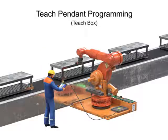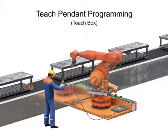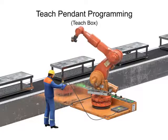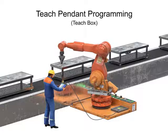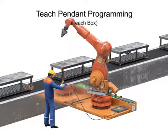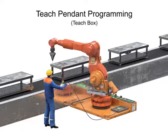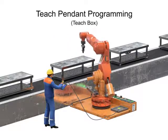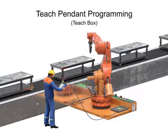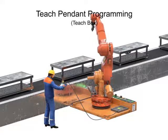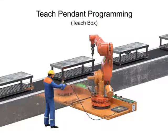Teach pendant programming is a method by which the operator steps the robot through the program point by point while recording the coordinates for each point. The technician has the ability to send the robot to a desired position, inch, or jog to adjust it and then record the point. The technician may also change the speed, since a low speed is usually required for careful positioning or while test running through a new or modified routine.